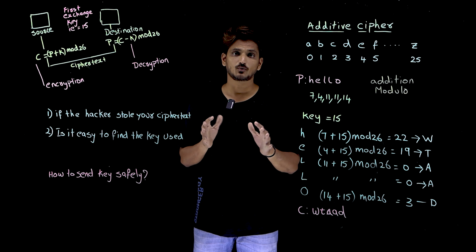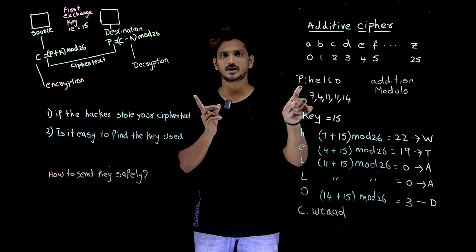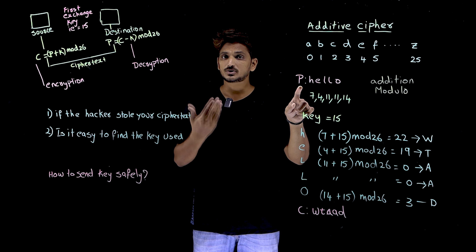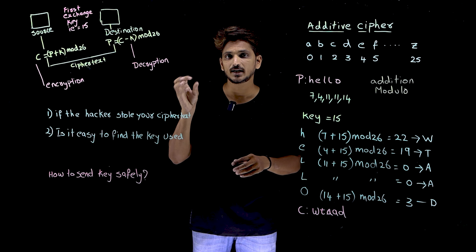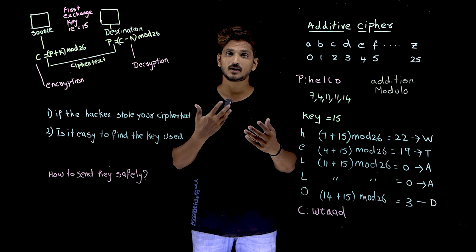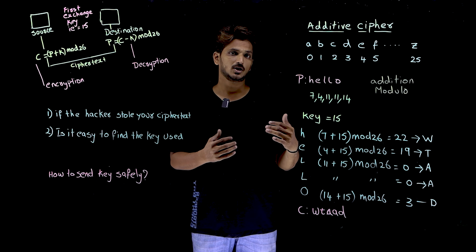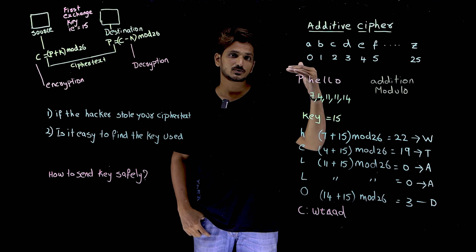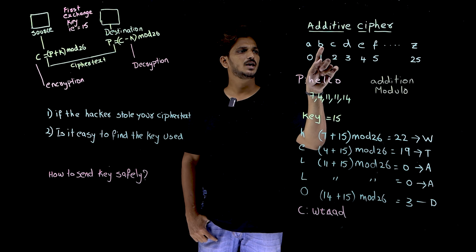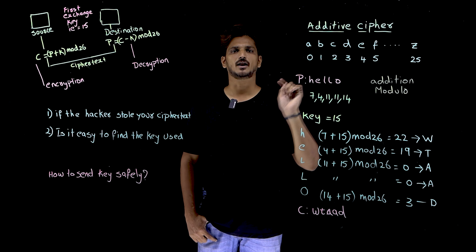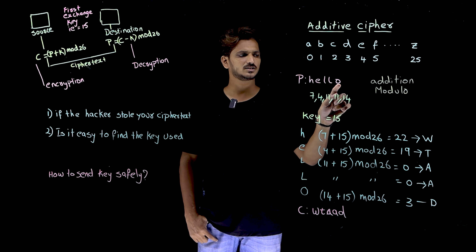Coming to the actual technique: P means plain text — the actual message. Suppose if we want to send the message H-E-L-L-O, the actual plain text should not be sent over the internet; we have to send the cipher text. So first find the numbers for our plain text: H is 7, E is 4, L is 11, L is 11, O is 14.